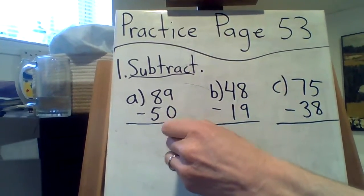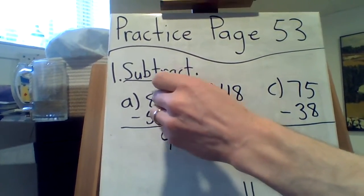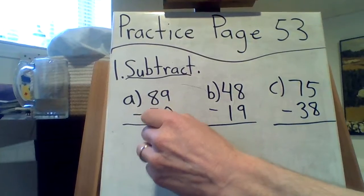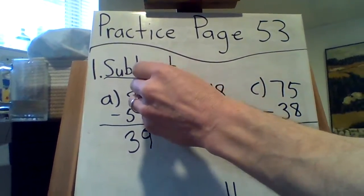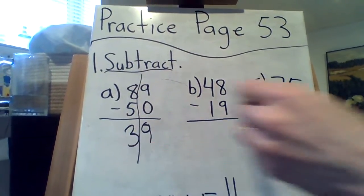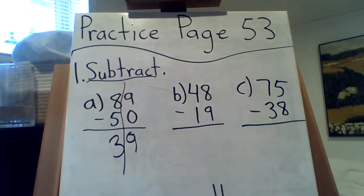89, take away 0, is 9. Always start with the ones. 8, take away 5, is 3, and wow. Couldn't be much easier than that. Okay, if you want, of course you can separate the tens and ones and make it even more obvious, but you definitely don't have to.